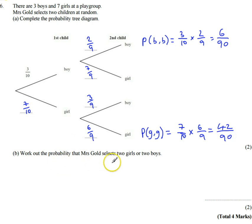So the probability that she picks two girls or two boys is going to be six ninetieths plus forty-two ninetieths, and that gives me forty-eight ninetieths. We're not asked for it in its simplest form, so we can just write it straight down as forty-eight over ninety.